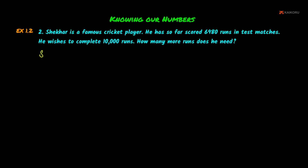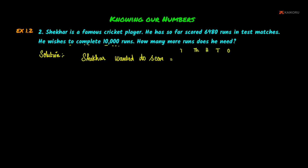Solution. The highest number is 10,000 — that is what Shaker wants to score, so that equals 10,000. It has 5 digits. The place values are: Ones, Tens, Hundreds, Thousands, Ten Thousands. So 10,000 is written in the ten-thousands place. The runs he has already scored equal 6,980, which has 4 digits.